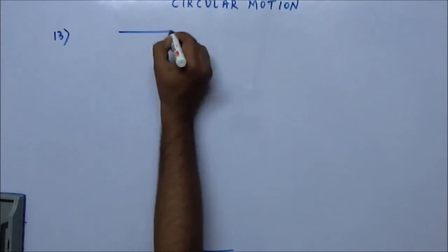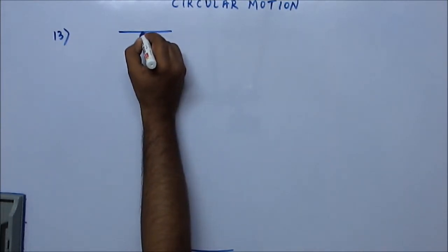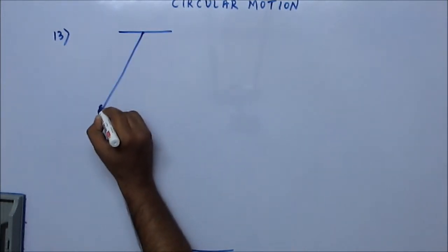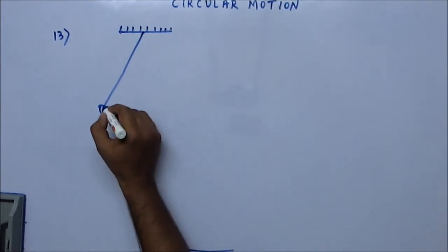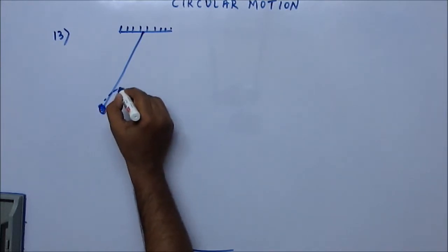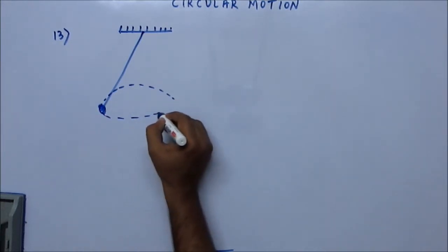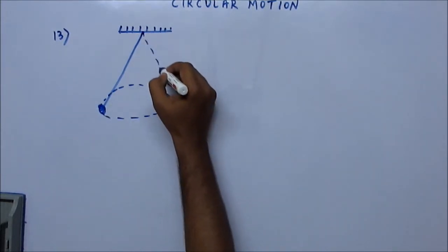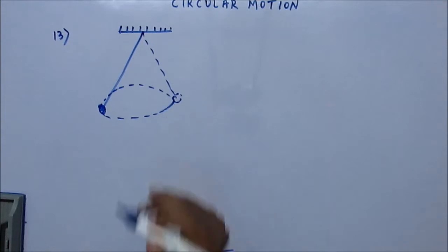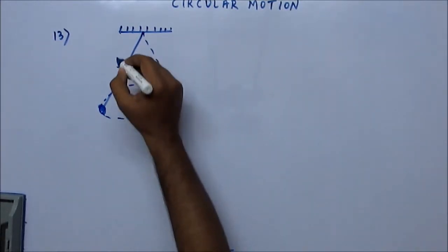Let's consider this situation: a string is tied from the ceiling, and this is the pendulum. This pendulum is undergoing circular motion in a horizontal direction. This kind of pendulum is called a conical pendulum. I have not drawn a proper cone, but I hope you would get the message. The length of the string is L.